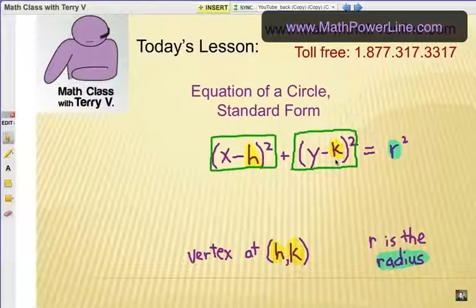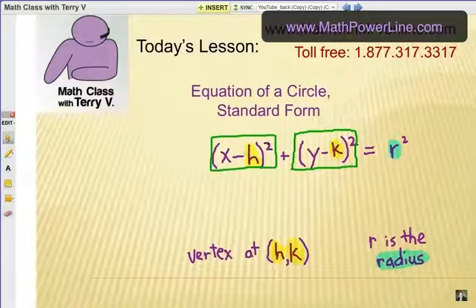Then we need to apply that to the equation of a circle. Now in standard form, it's going to look like this: you have (x-h)² plus (y-k)² equals r². So r represents the radius, and if you can rewrite an equation in standard form like this, it will be a circle, and the center is going to be at (h, k).